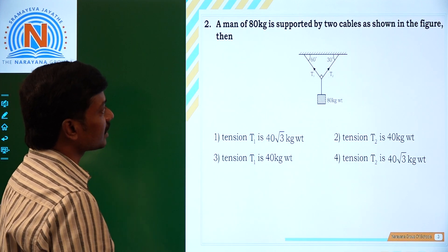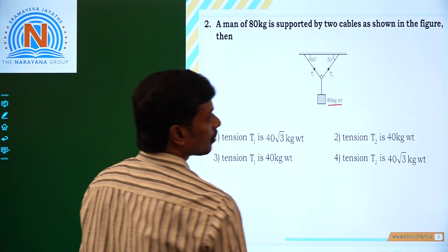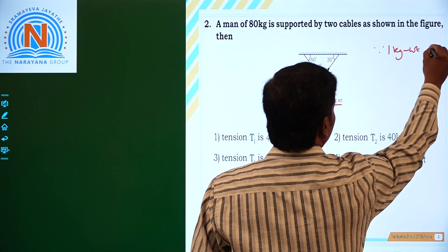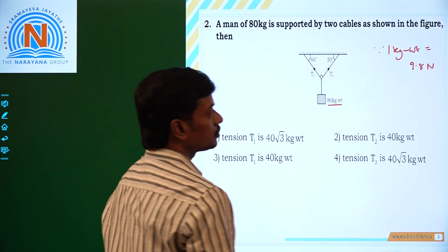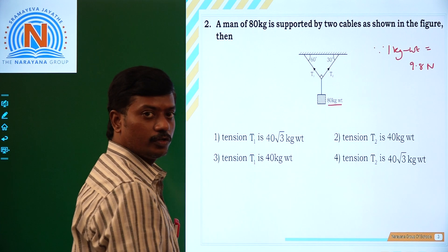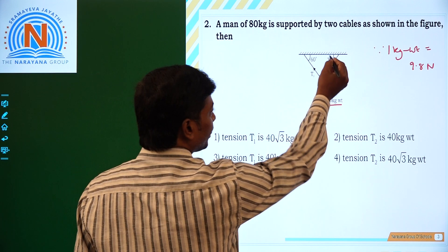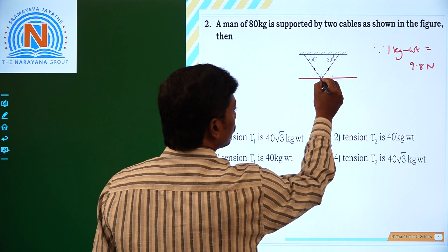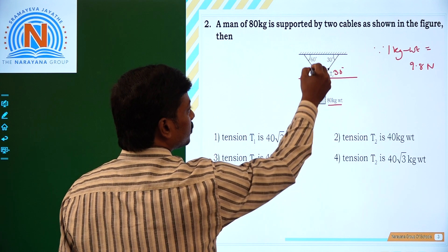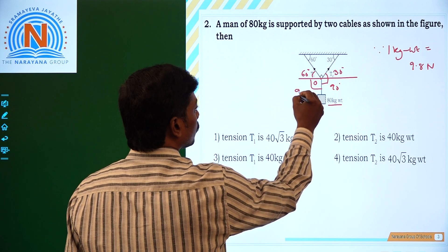A man of 80 kg is suspended by 2 cables as shown in the figure. The weight is given in kg weight. Students, we need to remember that 1 kg weight equals 9.8 newtons. Now here the angles are 60 degrees and 30 degrees. If you take the horizontal line about the point O: if this is 30 degrees, then this is also 30 degrees, and this is 60 degrees, then this is also 60 degrees. We know that this angle is 90 degrees, and this is also 90 degrees.